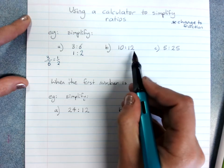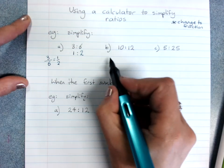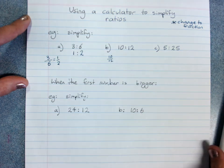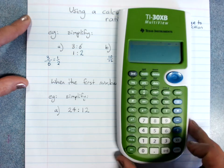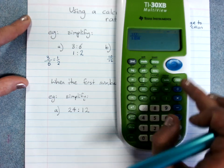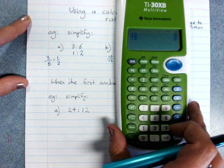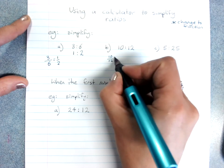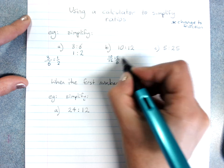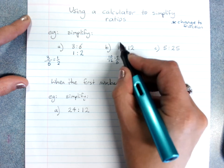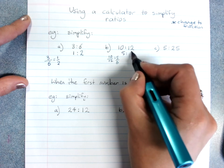So this one here, change it into a fraction, 10 over 12. Use your calculator and your fraction key, 10 over 12 and I've got 5 over 6 and change it back into a ratio. Small number first here, 5 to 6.